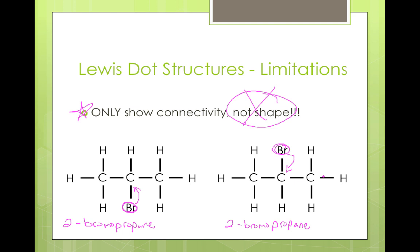Where the bromine physically shows up in the molecule — whether on one side or the other — can potentially have an impact on its chemical behavior. This is why the Lewis dot structure, while valuable, doesn't provide us with all the information we need to understand the nature of a chemical substance.